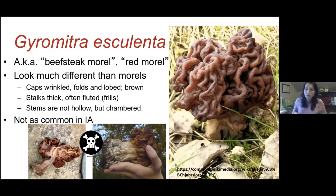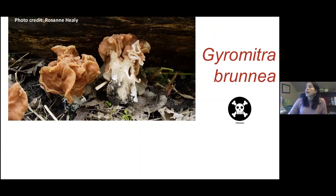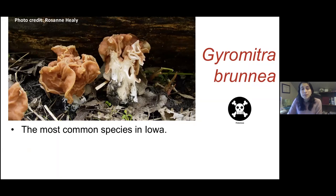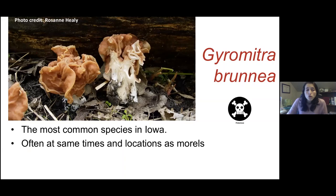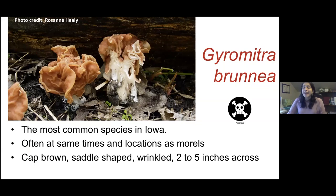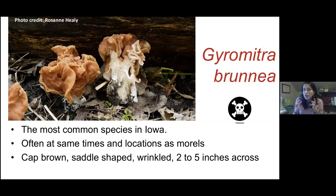Gyromitra esculenta is not very common in Iowa, but you may run into some. Another one is Gyromitra brunea — the most common Gyromitra species in Iowa, and also very toxic. Unfortunately it overlaps in time and location with true morels. The cap is brown with a saddle shape, wrinkled, and could be two to five inches across. If you find a very young specimen just starting to emerge, you might think it's a true morel — but don't fall for it. Split it in half and check if the stem and cap are hollow.